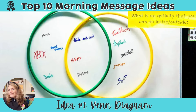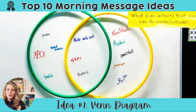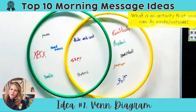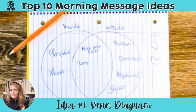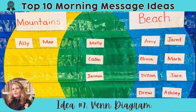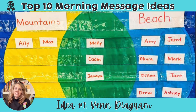Idea number seven is to use Venn diagrams for students to interact and have a class discussion. It's a great idea to use these when you're also tackling them as your comprehension skill. You can either have students answer right on the whiteboard, write in their journals, or do both. Another option is to use a Venn diagram pocket chart.